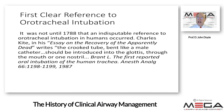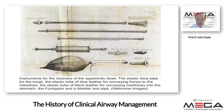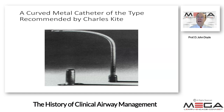It was not until 1788 that an indisputable reference to oral tracheal intubation in humans occurred. Charles Kite, in his essay 'On the Recovery of Apparently Dead,' wrote that a crooked tube bent like a male catheter should be introduced into the glottis through the mouth or one nostril. Here are some instruments for the recovery of the apparently dead from that time — an elastic blowpipe for the lungs and an elastic tube of black leather — the idea being that one could ventilate the lungs in this manner.